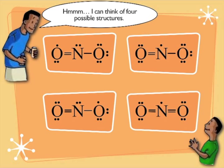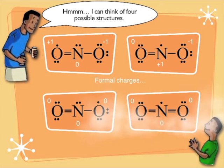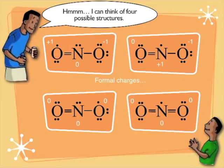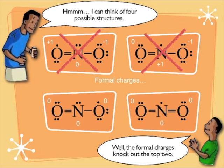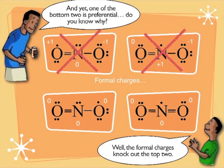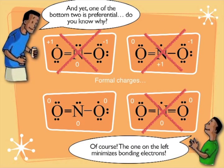We can figure out all the formal charges for these structures. In the top-left one, the oxygen has two bonding electrons and three nonbonding electrons, giving a formal charge of +1. The nitrogen in the middle has three bonding and two nonbonding electrons, giving zero. The oxygen on the right has six nonbonding and one bonding electron, giving −1. The bottom structures are better because you end up with zero formal charges — six, five, six across in both situations. But one of the bottom structures is preferential because it only makes three bonds as opposed to four, so that's how you identify the preferred structure.